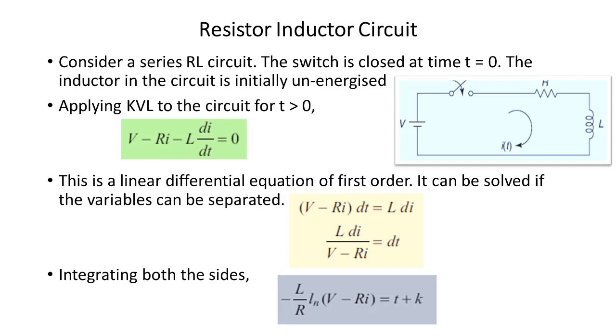Write the KVL equation here for t greater than zero when the switch is closed, which is equal to V minus Ri minus L di/dt.